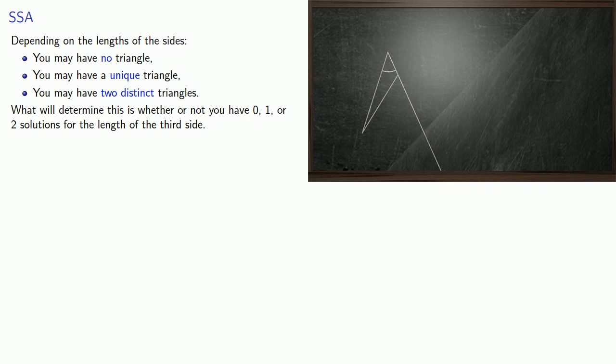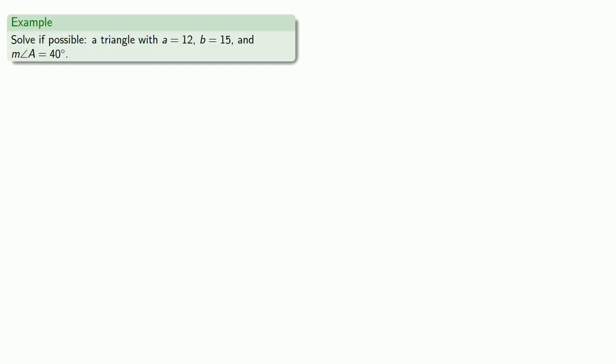A useful idea to keep in mind in this case is that in side-side-angle, the far side swivels. So, if possible, we'll solve a triangle with A equals 12, B equals 15, and the measure of angle A equals 40 degrees. So, to begin with, we'll draw a picture.